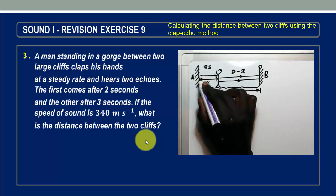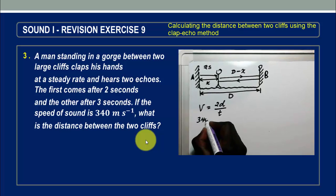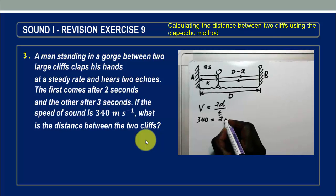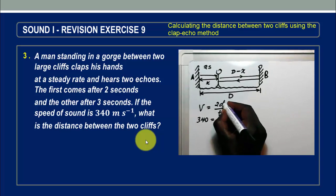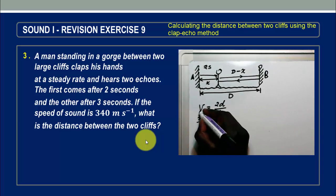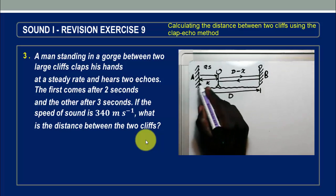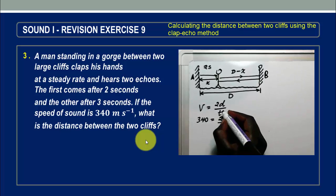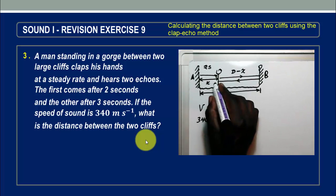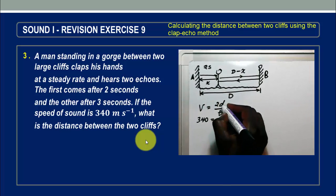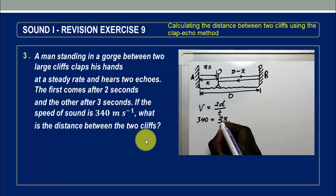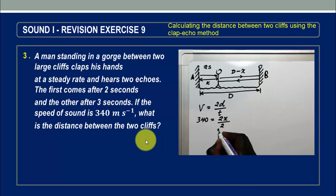If we apply this equation for the section towards cliff A, the speed of sound is 340 meters per second, equal to 2X divided by 2 seconds — note that this D in the equation is X, which is different from the capital D representing the total distance between the two cliffs. The 2s cancel out, and we get X directly equal to 340 meters.